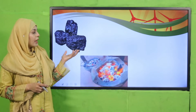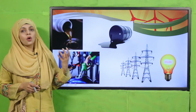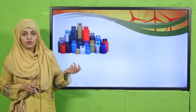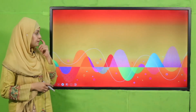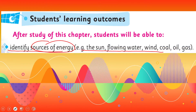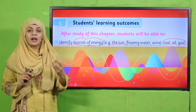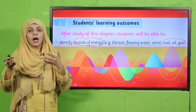Coal helps to produce heat and electricity. Oil is used to run different vehicles and generate electricity. Gas burns in stoves and helps us stay warm and cook food. So these are all different sources of energy around us — sun, flowing water, wind, coal, oil, and gas — which we benefit from on a daily basis.